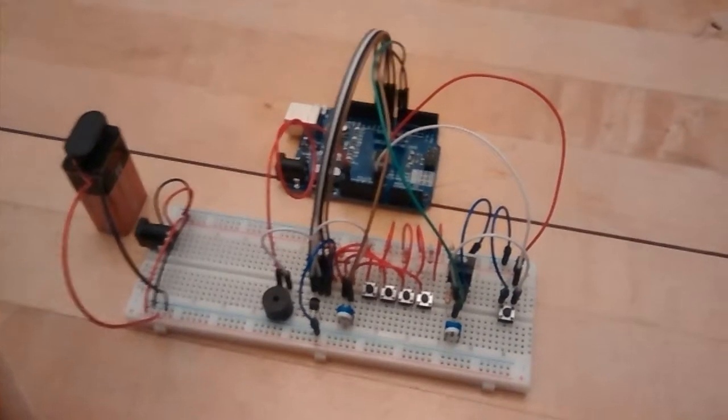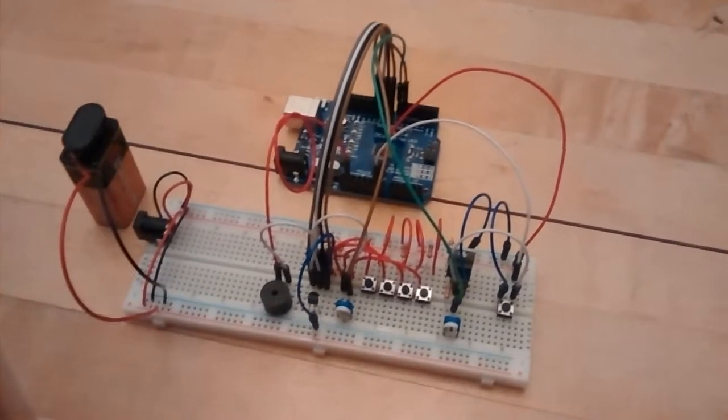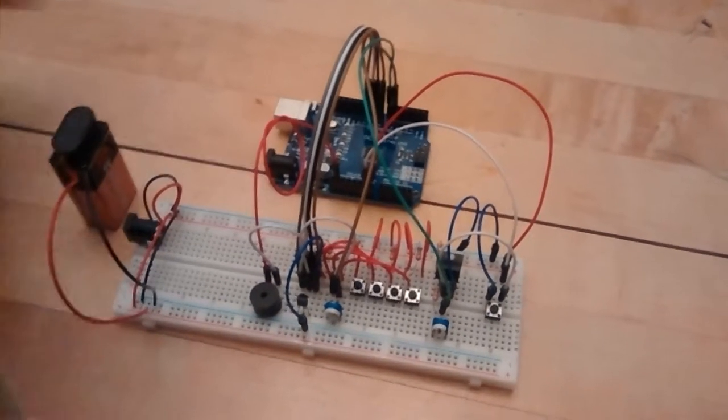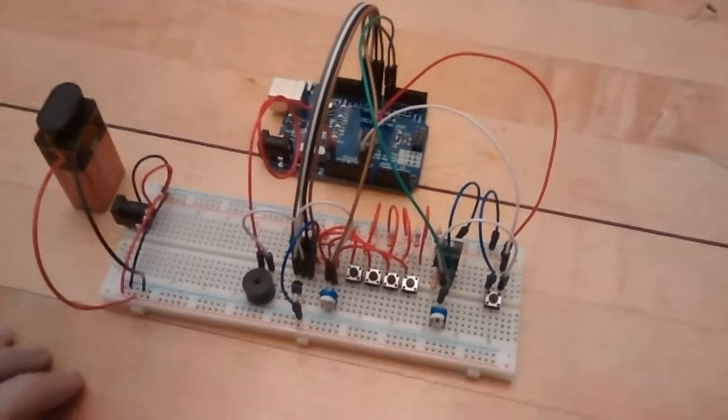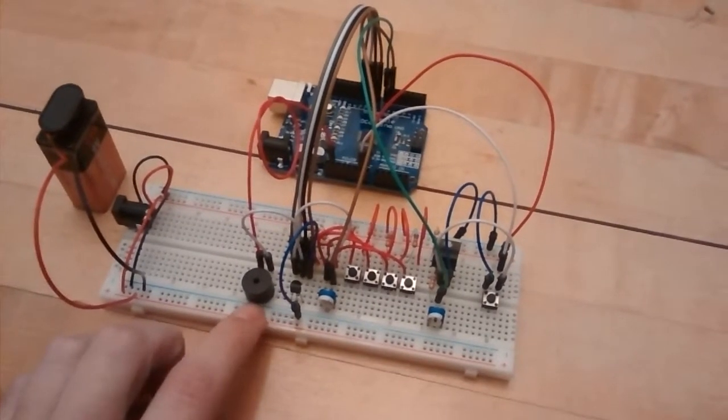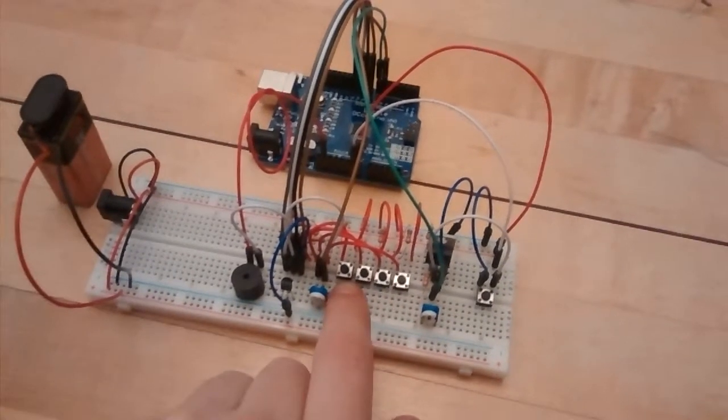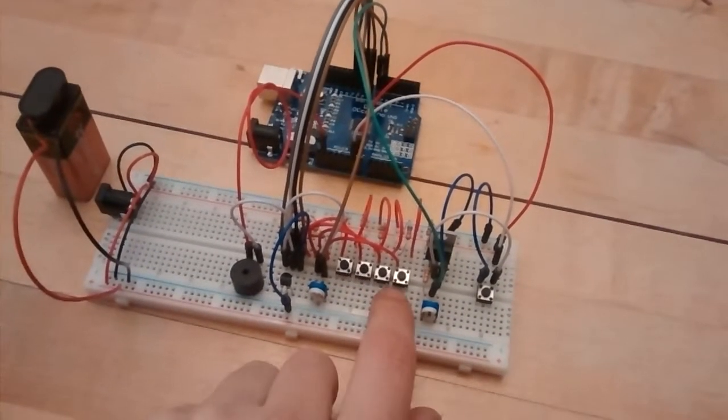So this is the mostly working prototype, there's still a few missing parts. Basically I've got a battery, the Arduino controller, a speaker here, two transistors, some resistors, and four buttons here for indicating the code.